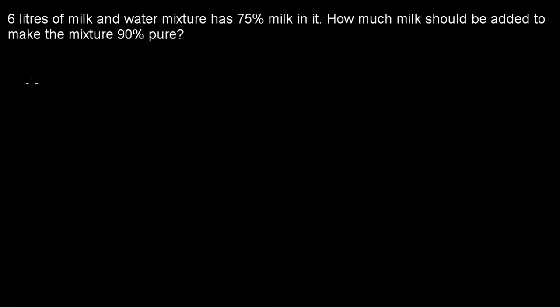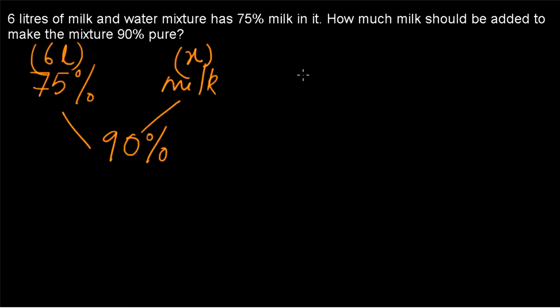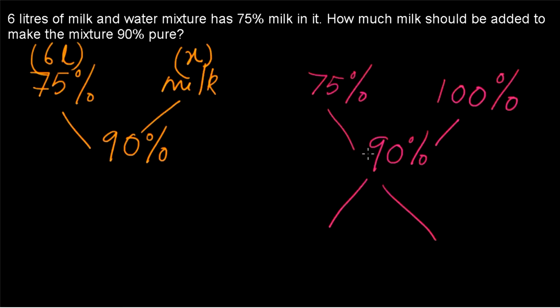One more example: 6 liters of a milk and water mixture has 75% milk. How much milk should be added to make the mixture 90% pure? A 75% milk solution is getting combined with pure milk to make the mixture 90% milk. The 6-liter quantity is given and we let the milk to be added be x liters. Since we are adding only milk — no water — it is 100% milk. So 75% milk solution combines with 100% milk to yield a 90% milk solution.